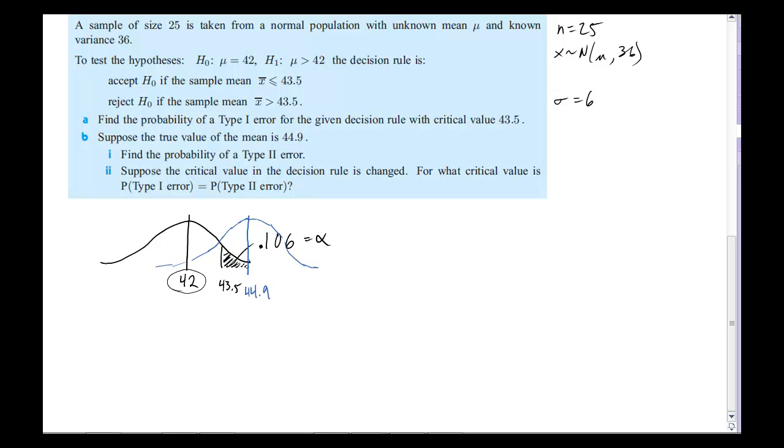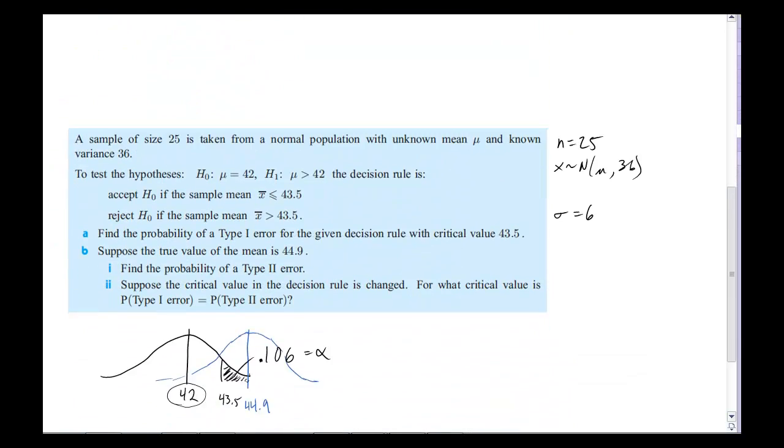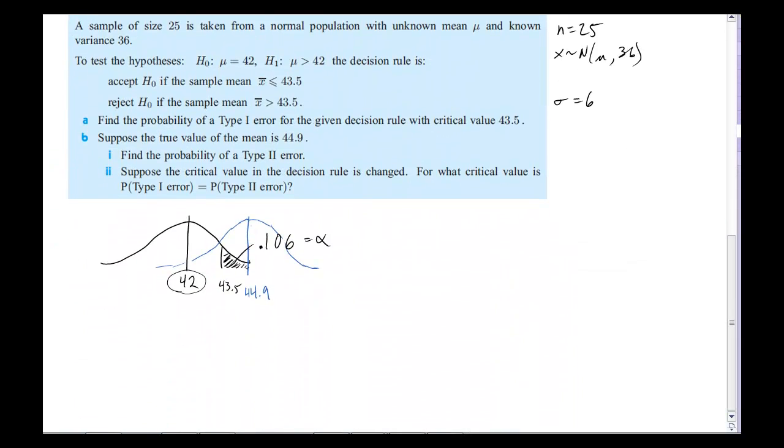The question says, find the probability of a Type 2 error. So remember, Type 2 occurs when we accept the null hypothesis, though in reality it's not true. So we're taking this true situation, which is 44.9, so this is the real distribution right here, and we tested this one over here.